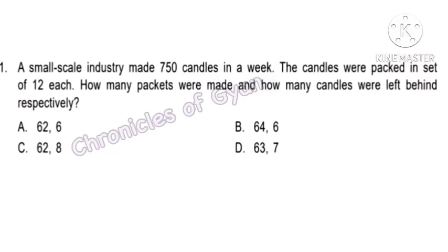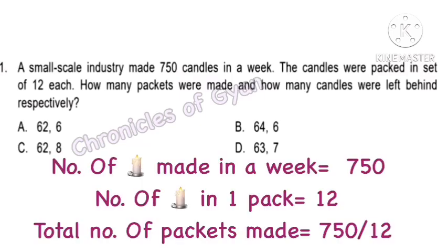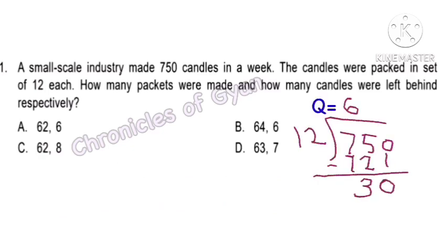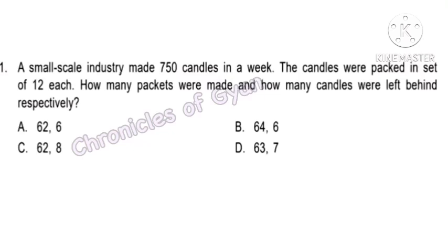Question 1. A small scale industry made 750 candles in a week. The candles were packed in a set of 12 each. How many packets were made and how many candles were left behind respectively? Number of candles made is 750, number of candles in one pack is 12. Therefore, 750 divided by 12 gives 62 packets and remainder 6. Hence, option A — 62 and 6 is the answer.